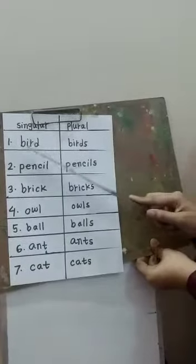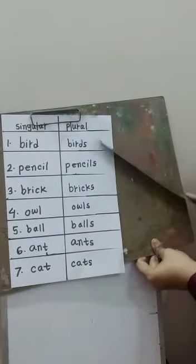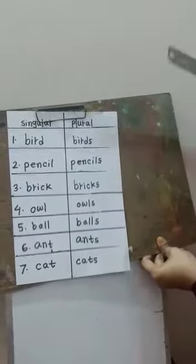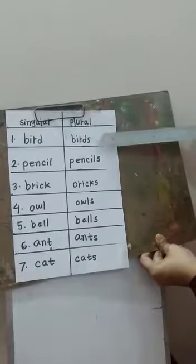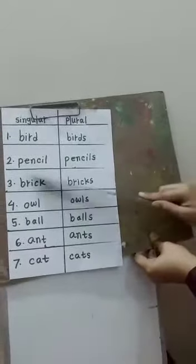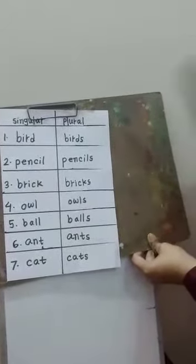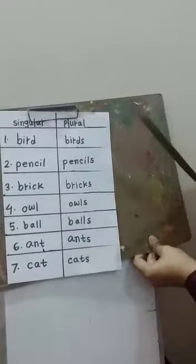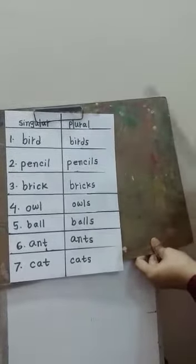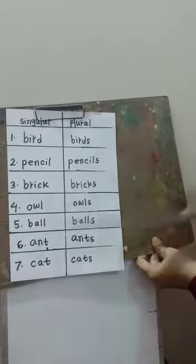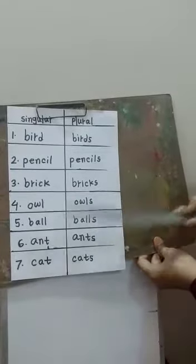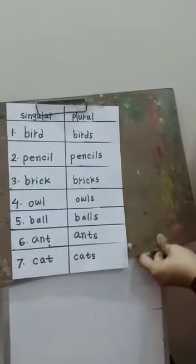The main point is: when we change the singular word into plural, at the end of the word we have to add S. Bird → birds, pencil → pencils, brick → bricks, owl → owls, ball → balls, ant → ants, cat → cats.